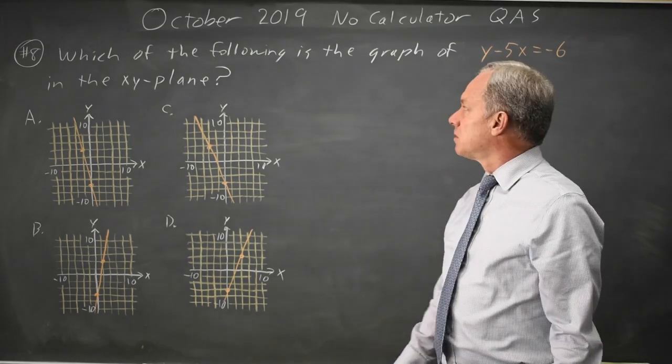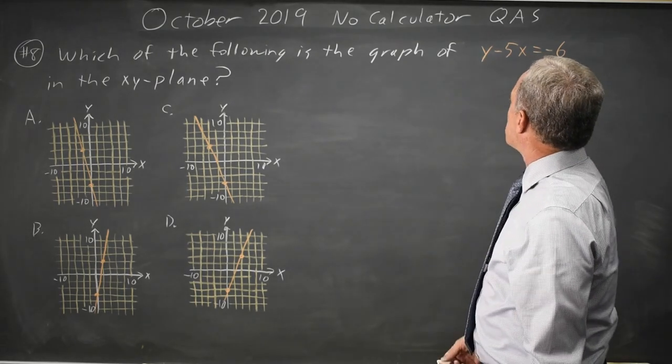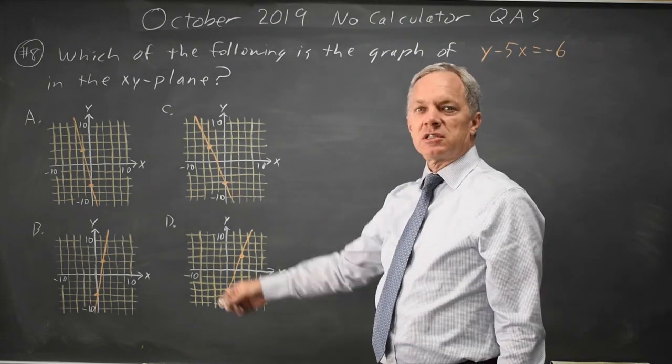This is question 8. The College Board gives us the equation of a line, y minus 5x equals negative 6, and asks which of these is the graph.